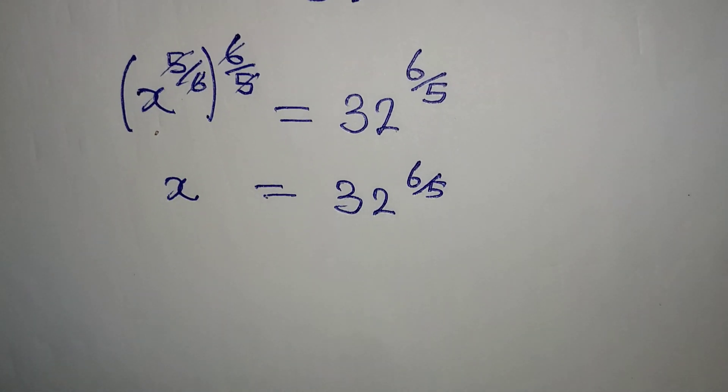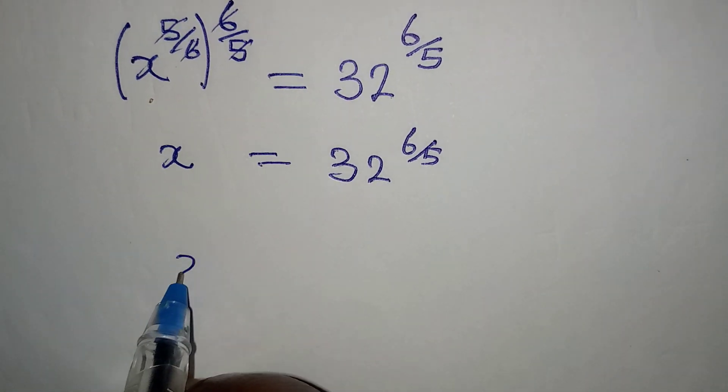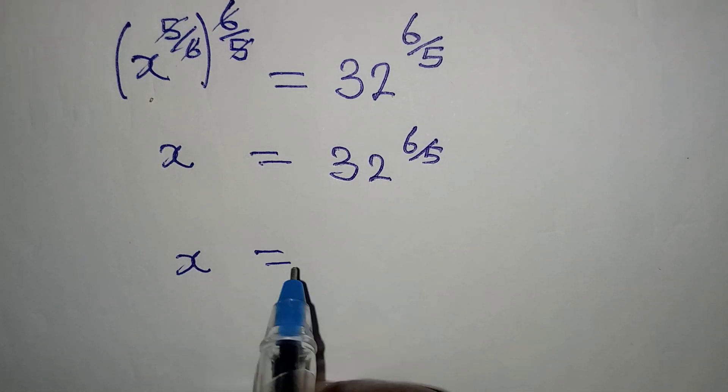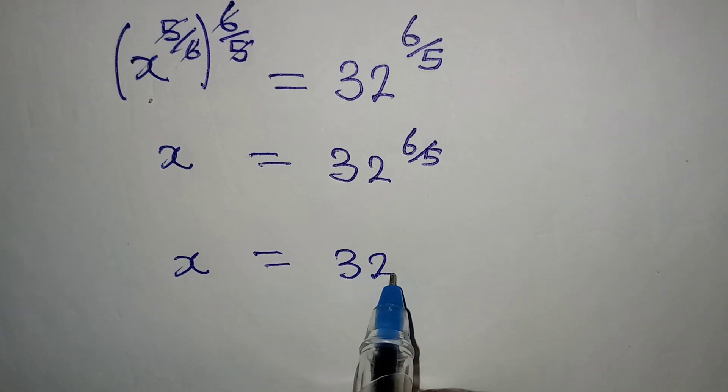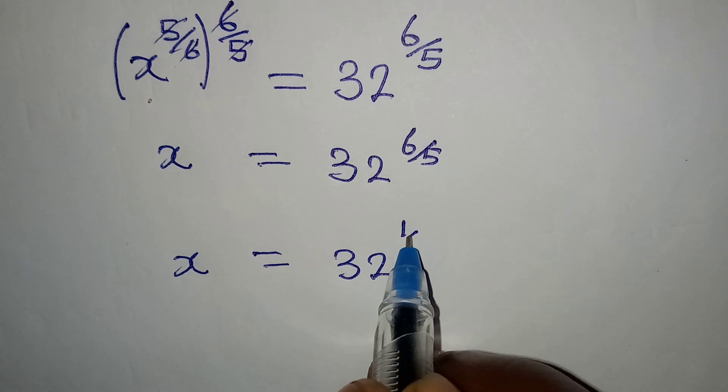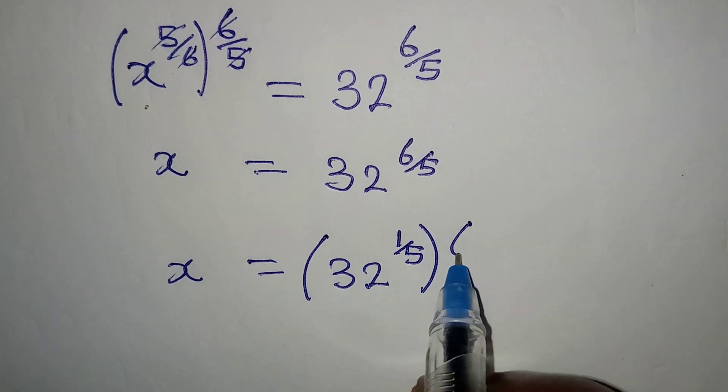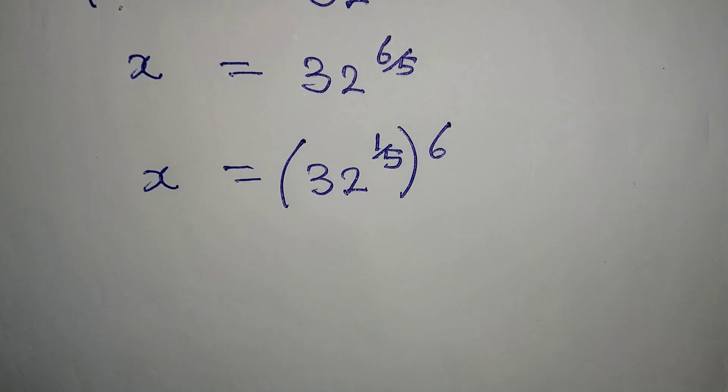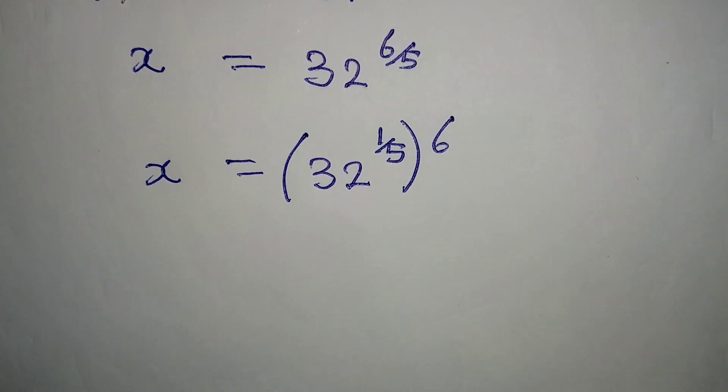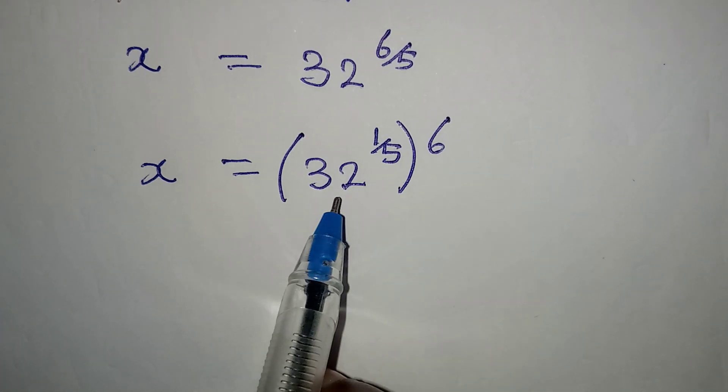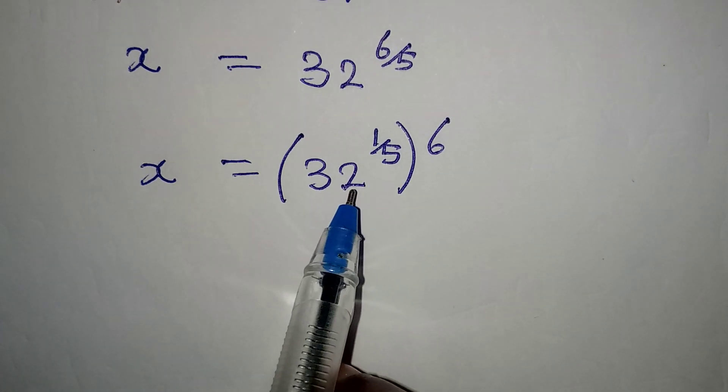But then do you know that this is the same thing as x being equal to 32 to the power of 1 over 5, then to the power of 6. Because from here, we can just find the 5th root of 32.